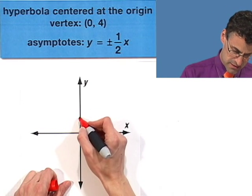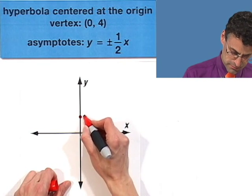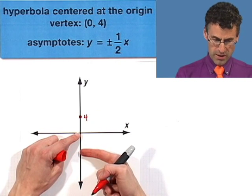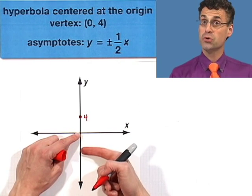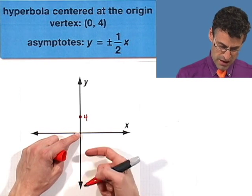We're given one vertex is (0,4). So that's on the y-axis, (0,4), let's say that's right here. And since it's actually going to be centered at the origin, then I know where the other vertex is going to be. Remember there's two wings to a hyperbola, so the other vertex will have to be at (0,-4).